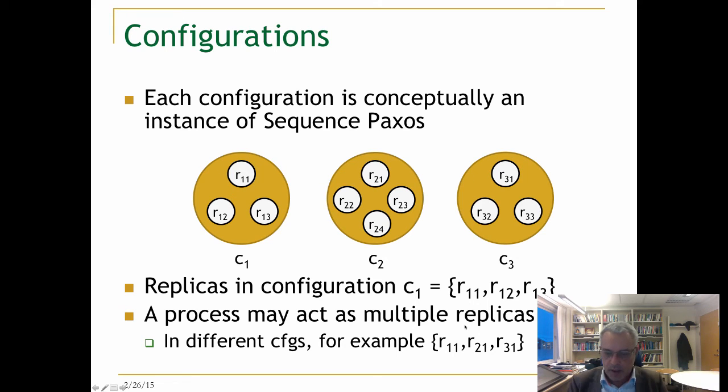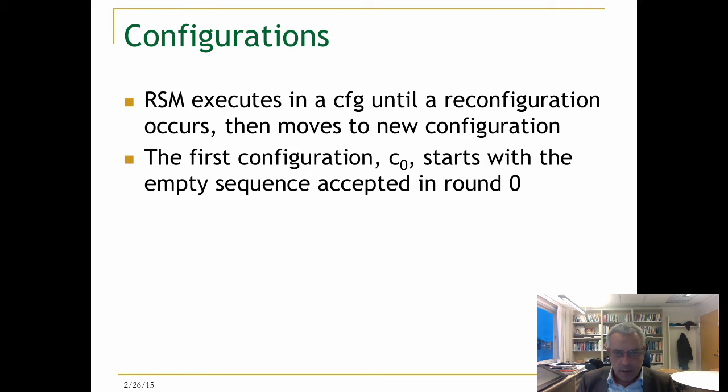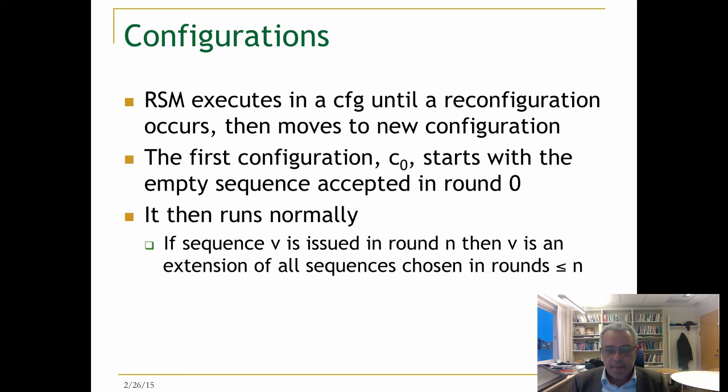A replicated state machine in a configuration executes until a reconfiguration command occurs, and then when that happens, it moves to a new configuration. Within a configuration, say c0, the machine starts with an empty sequence of commands accepted in round zero. It runs normally, and then if the sequence v is issued in round n, then v is an extension of all sequences chosen in rounds before n.